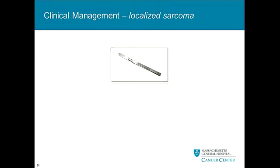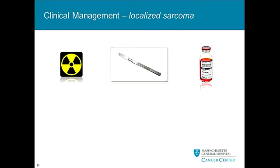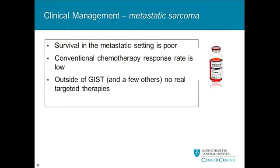Our current clinical management has really been stuck in the same place for about 30 years. We still do surgery for localized disease, and then for patients with high-grade tumors we often incorporate some combination of radiation and chemotherapy. For patients with metastatic disease, survival is really poor — for soft tissue sarcomas, average survival in the metastatic setting is only 12 months. We're still using adriamycin; it's our best drug, and our response rates to chemotherapy are quite low. So clearly we can do better.